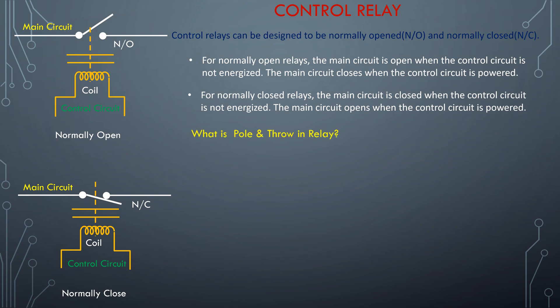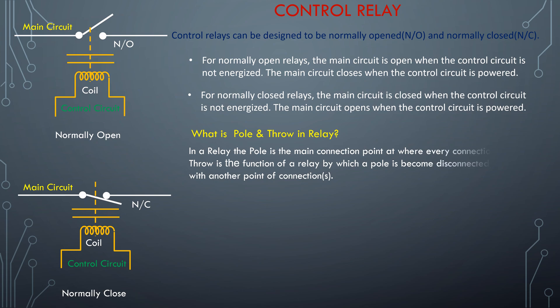To know the characteristics of a relay, we have to know what is pole and what is throw in a relay. In a relay, the pole is the main connection point where every connection occurs, and the throw is the function of a relay by which a pole becomes connected with another point of connection. Now we shall discuss about pole and throw of some relays.